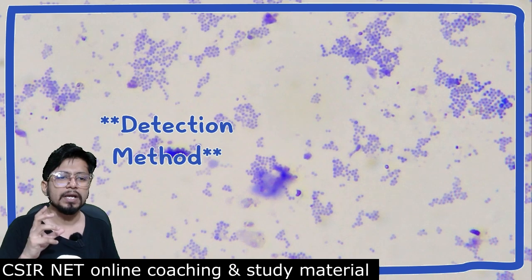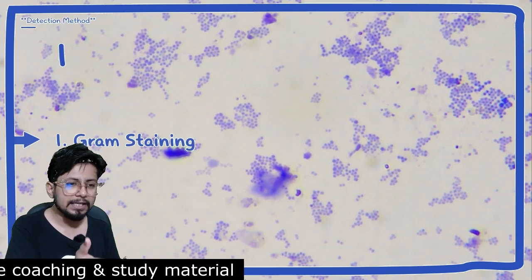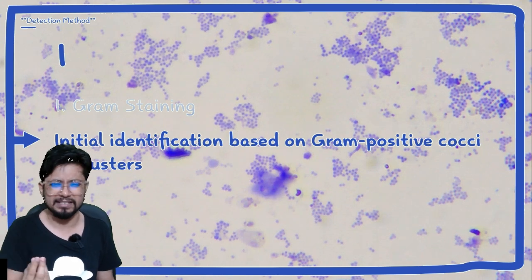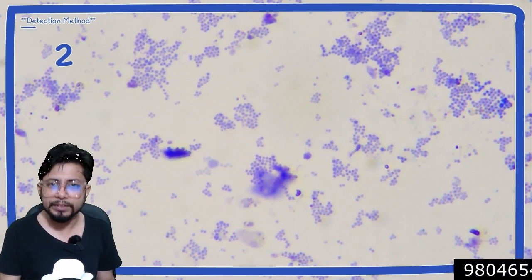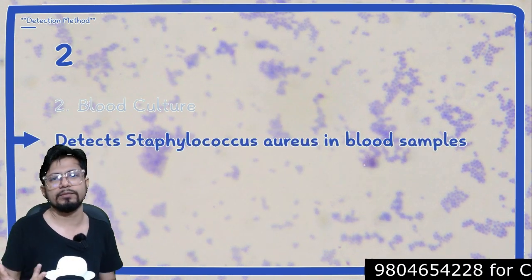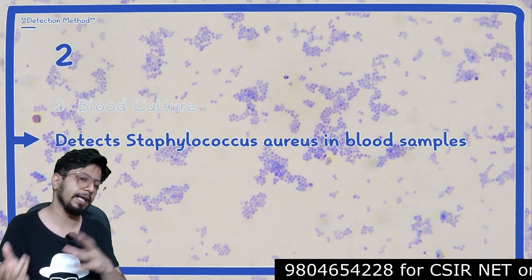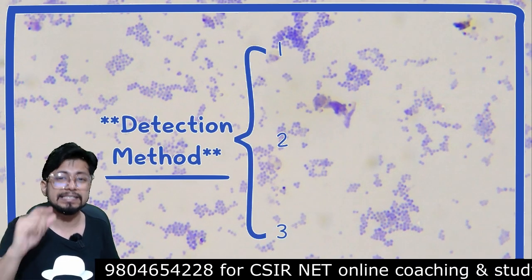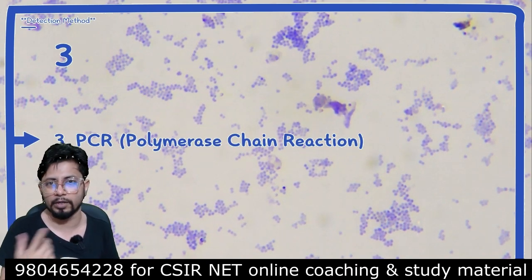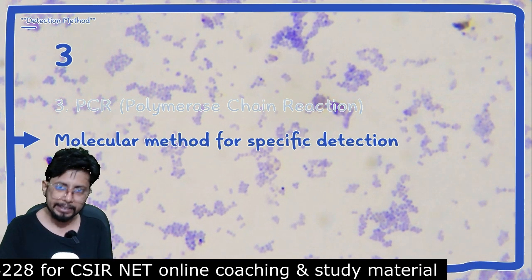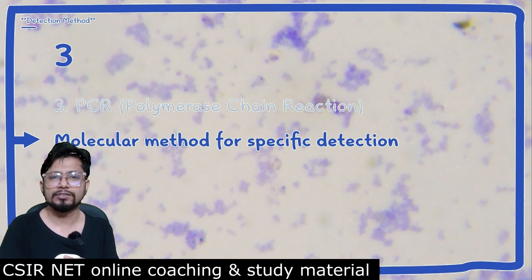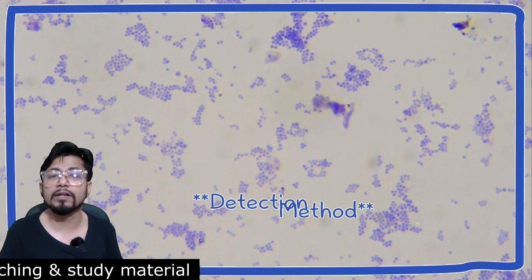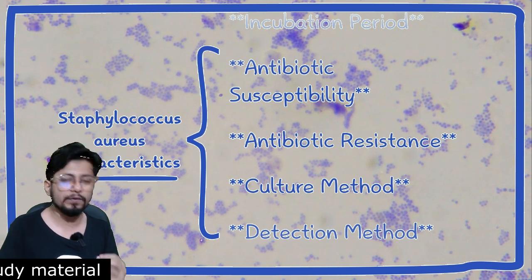There are three detection methods. First, gram staining identifies gram-positive cocci in a cluster shape, though it is not 100% confirmatory. Second, blood culture — we take blood from the patient and culture it on blood agar; if Staphylococcus aureus is present, it is detected by its characteristic colonies. Third, PCR (polymerase chain reaction), a molecular method for detecting specific nucleic acid components of Staphylococcus aureus in the sample.